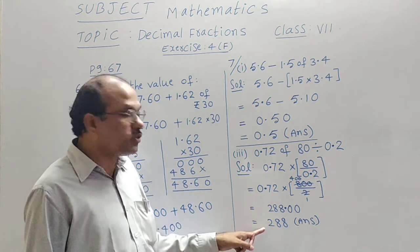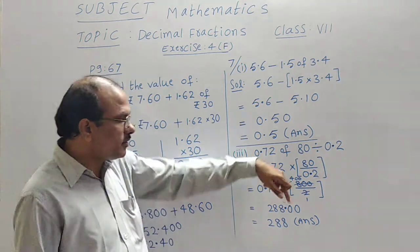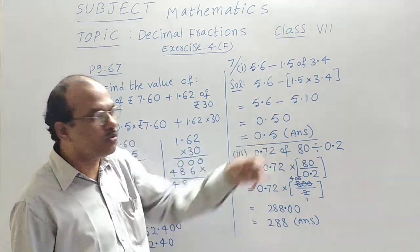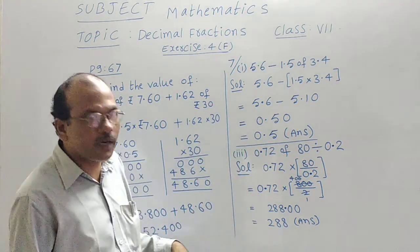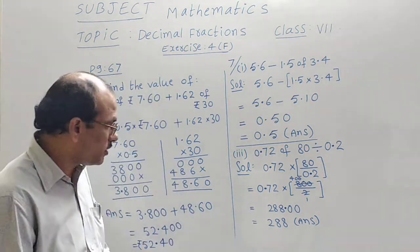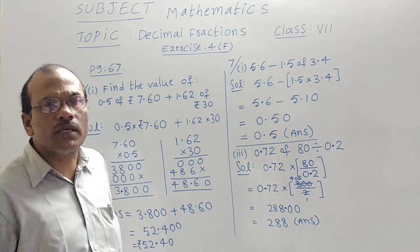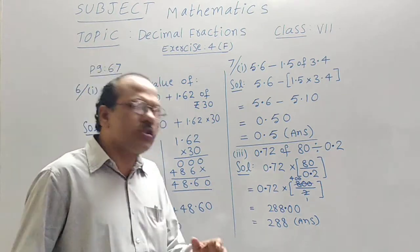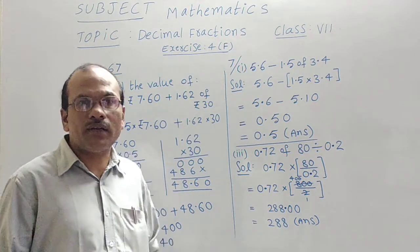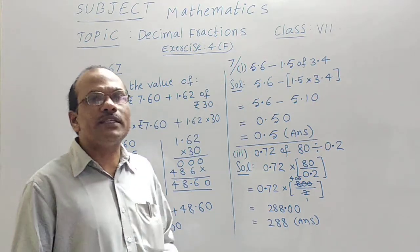That can also be written as 288. Because these 2 zeros are having no value. That is why I have removed that part. 288 will be the answer for this question. Now here and there some sums are left by me. Those are of the same model in the question 6 as well as in the question 7.